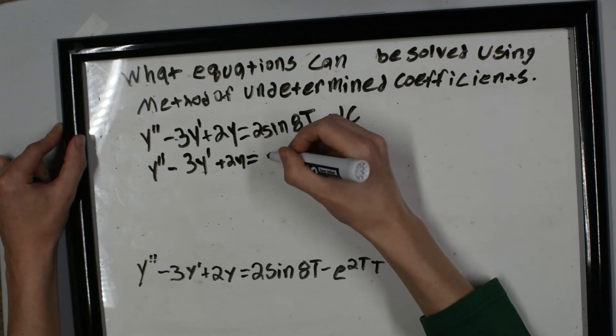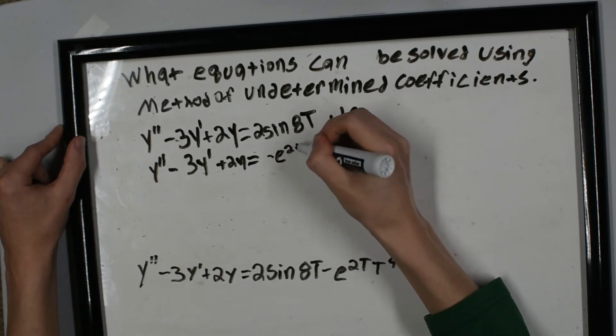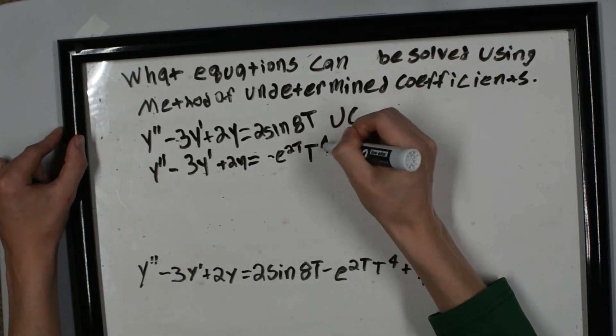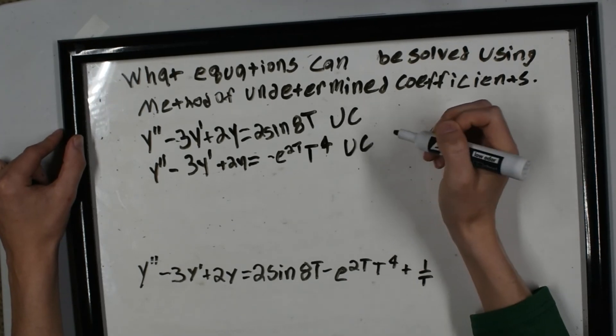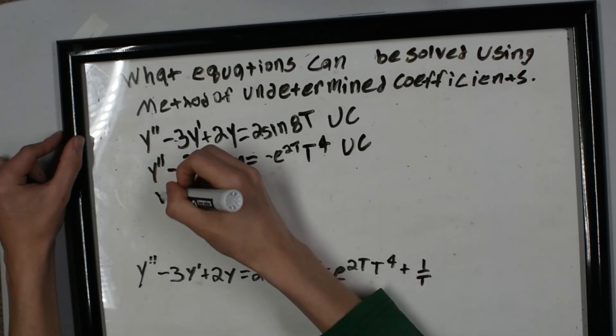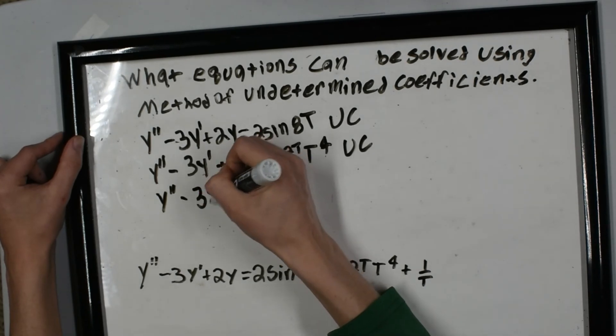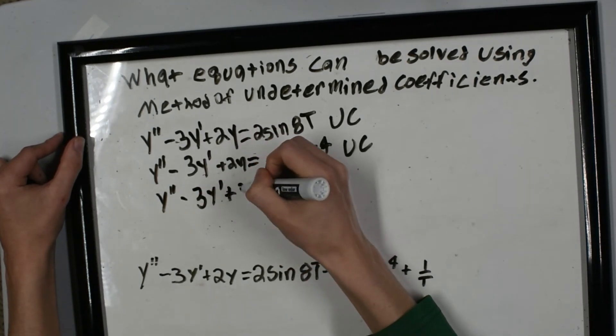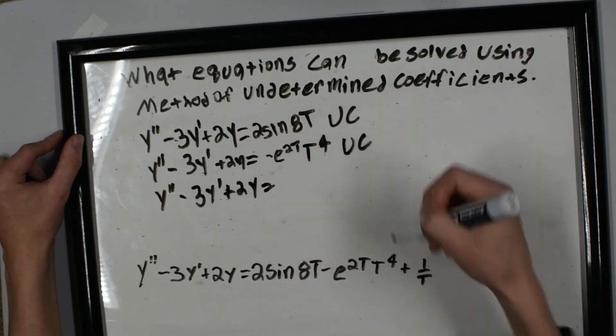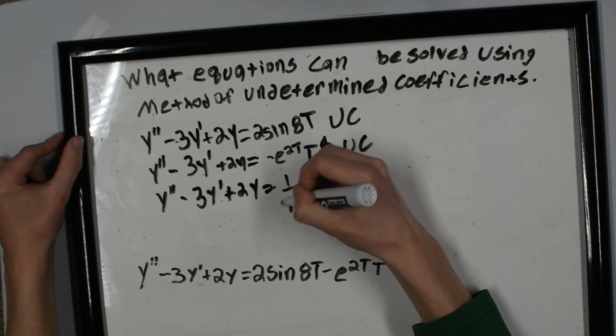And we have this. Well, -e^(2t)·t^4, that's also undetermined coefficients. Finally, we have y'' - 3y' + 2y = 1/t. Well, now this is variation of parameters.